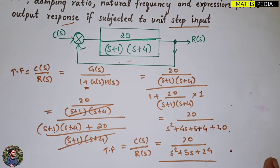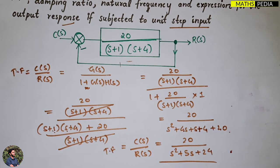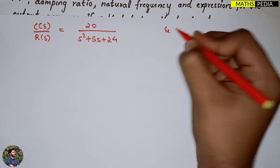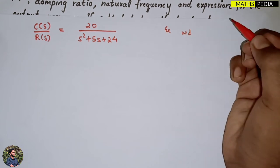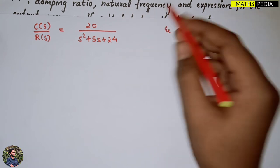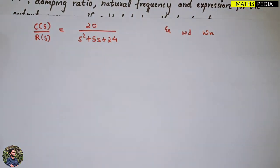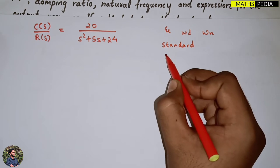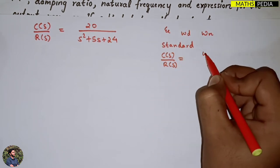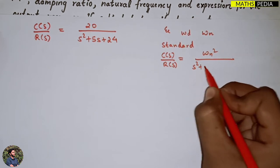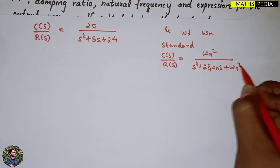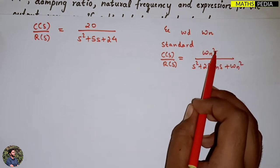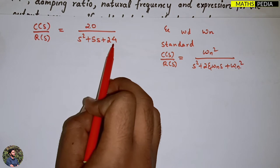From this transfer function we can easily find the damping ratio, natural frequency, and all. To find the damping ratio ζ, damped frequency ωd, and natural frequency ωn, we compare with the standard second-order form: C(s)/R(s) = ωn² / (s²+2ζωns+ωn²). Note that ωn² here is 24 but the numerator is 20 — they don't match, so we must compare using the denominator only.